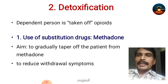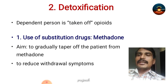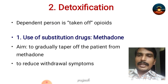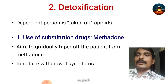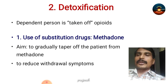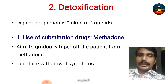The second point in treatment is detoxification — the person is taken off opioids, which precipitates withdrawal symptoms, and these are treated by substitution drugs. The opioid substitution drug is methadone — this is a very important point. The aim of opioid substitution therapy or methadone substitution therapy is to gradually taper off the patient from methadone and to reduce withdrawal symptoms.